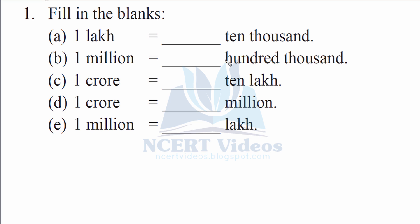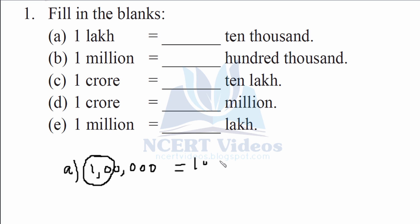Fill in the blanks. We have to write the following in terms of different units. So 1 lakh can be written as 1,00,000. Now we have to think how many 10,000s 1 lakh gives. When we multiply a factor of 10 with 10,000 it comes out to be 10 times, so 10 into 10,000 — adding one more zero gives 1,00,000 because five zeros are there.